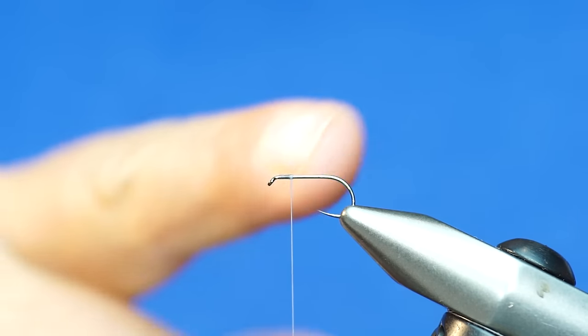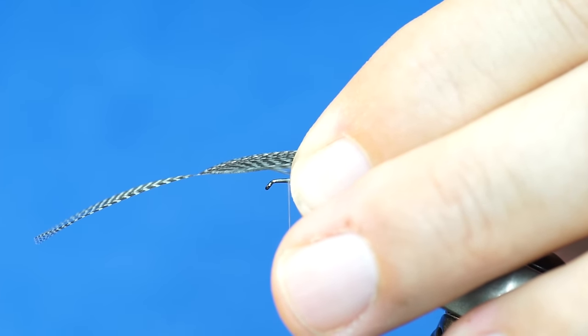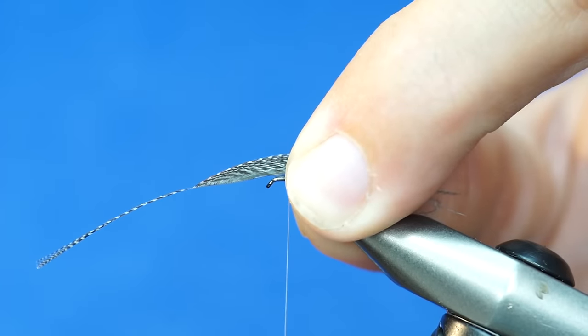You want to tie this in a couple, three eye lengths back from the eye of the hook. You'll do a pinch wrap.